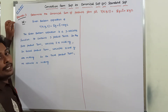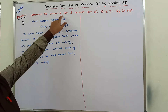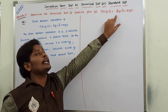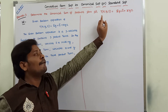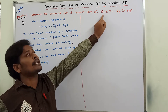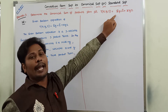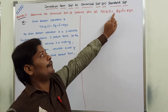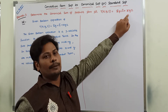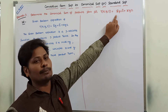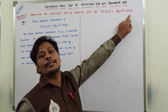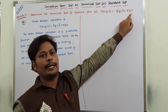The problem we have to solve is: determine the canonical sum of products form for T(x, y, z) = x̄y + z̄ + xyz. The given Boolean expression is a three-variable function containing variables x, y, and z. It contains three product terms: the first is x̄y, the second is z̄, and the third is xyz. In the first product term, variable z is missing. In the second product term, variables x and y are missing. In the third product term, no variable is missing — all three variables exist.